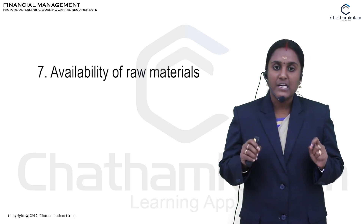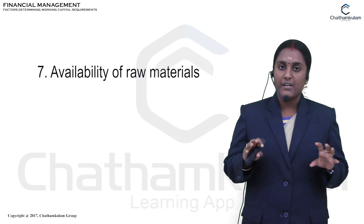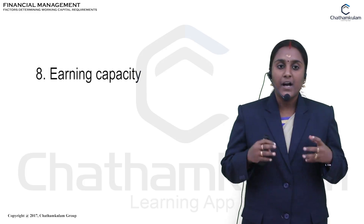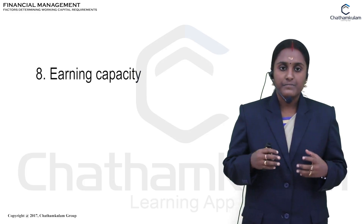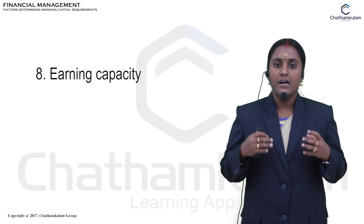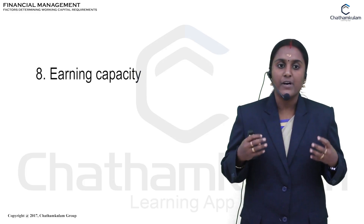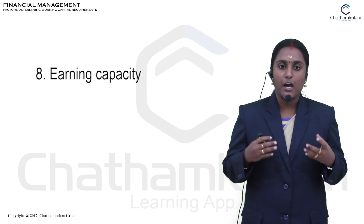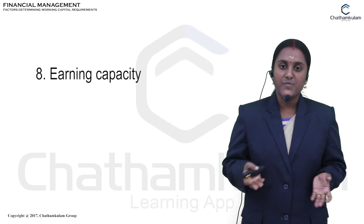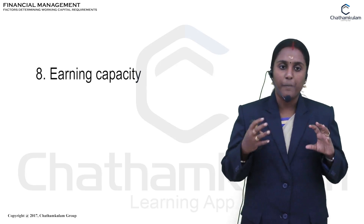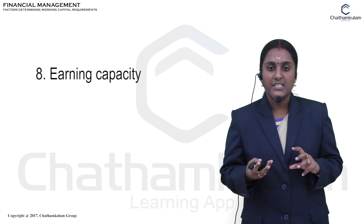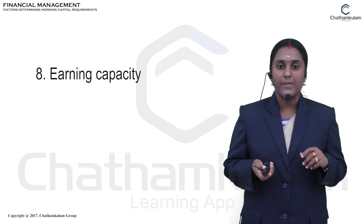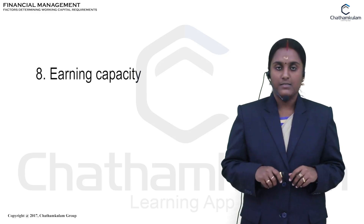The eighth one is earning capacity. If the business concern has a high level of earning capacity, they can generate more working capital with the help of cash from operations. Earning capacity is also one of the factors which determine the working capital requirement of the business concern.